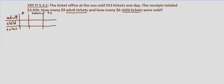I set up a table where the number of a type of ticket times its value equals the total value. Let a equal the number of adult tickets and c equal the number of child tickets. Their value is nine dollars each, so the total value is nine times a. For children, the value is six dollars each, so the total value is 6c.